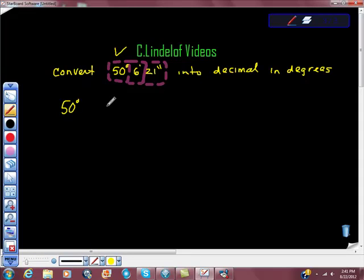The second part is 6 minutes. There are 60 minutes in a degree, and we have 6 of them, so we have 6 times 1 over 60, which is equal to 1 tenth.